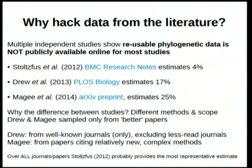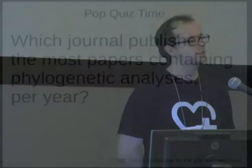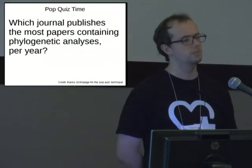So why do we hack it from the literature? I was involved in the first paper — a BMC Research Notes paper — and we estimate that only about 4% of phylogenetic trees are archived. Other papers have estimated slightly higher, but using slightly different methods. It might be interesting to ask where most phylogenetic analyses per year are published — I'm not sure even experts in the field know.